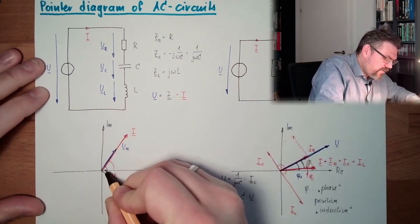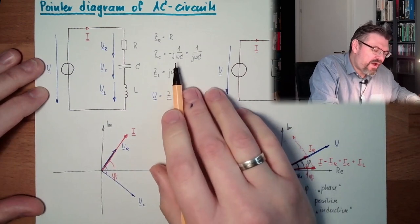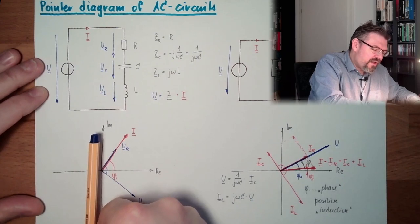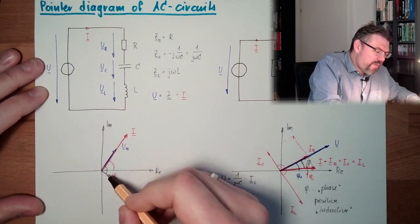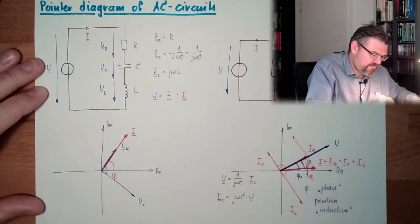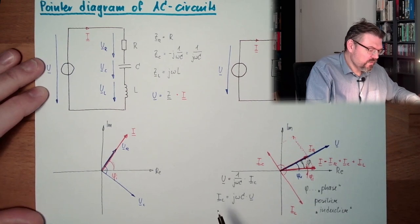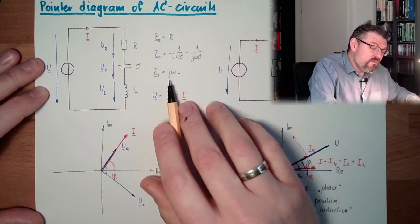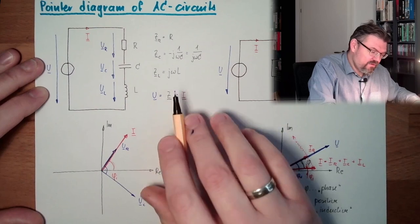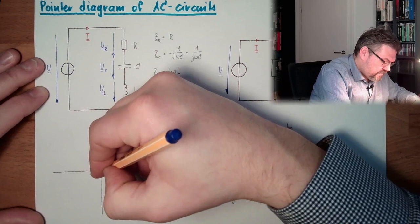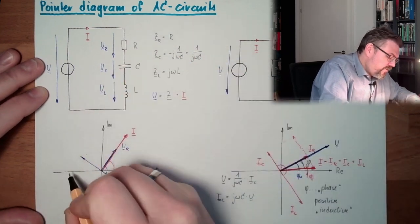Because simply, we have to multiply with minus J omega C. And minus J omega C is pointing in this direction. So we are multiplying this angle phi minus 90 degrees. If we are dividing, it's the same. And now, let's also come to UL. Here we multiply with J omega L. Here this would be J omega L multiplied by I. So we are adding 90 degrees. So here we have UL.